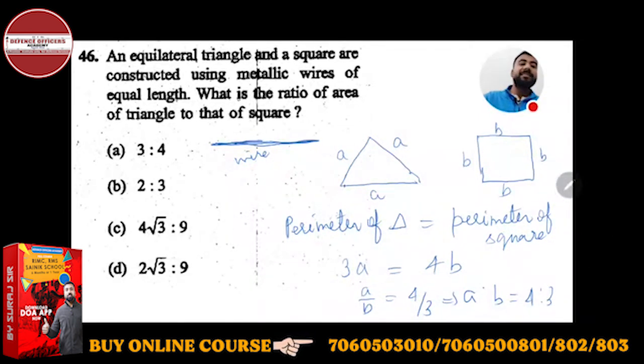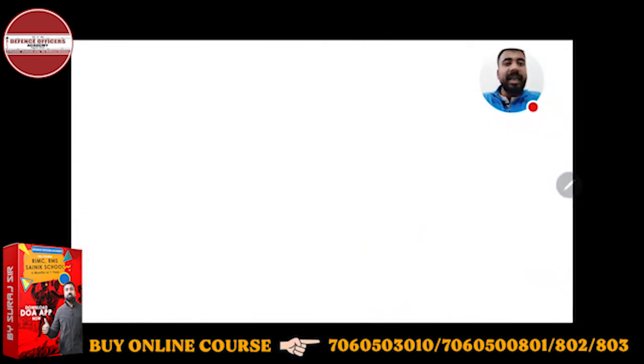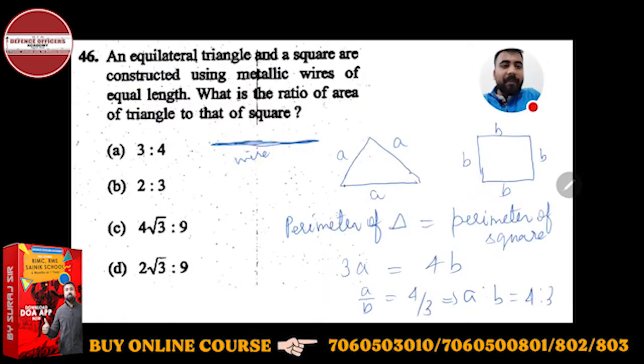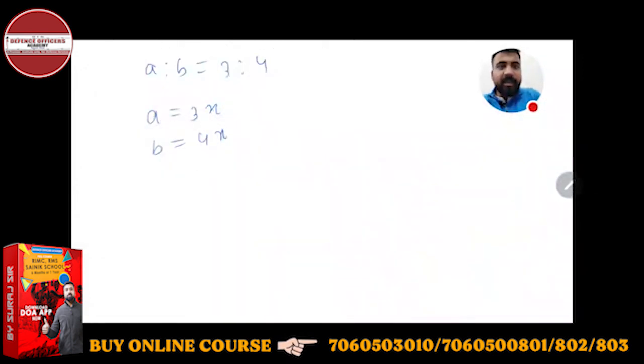If a is to b is equal to 4 is to 3, when you take common multiple, a's value will be 3x or 4x. Actually, a will be 4x and b will be 3x, so this is 4 is to 3, so a is 4x and b is 3x.